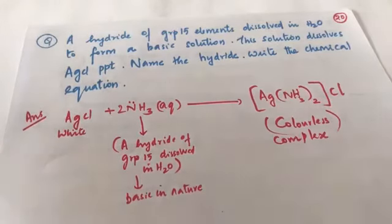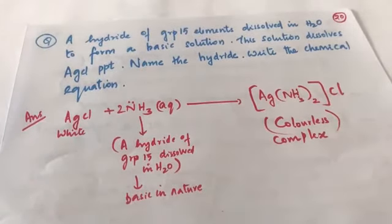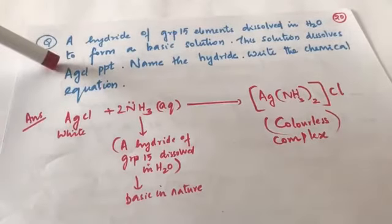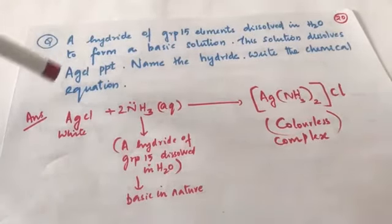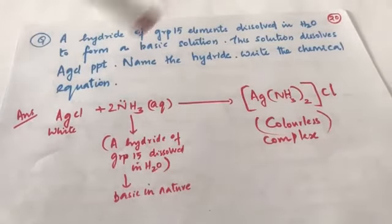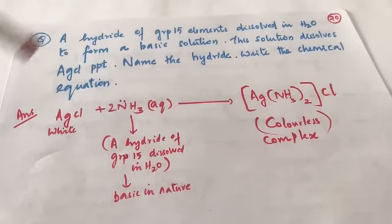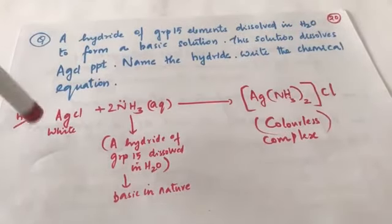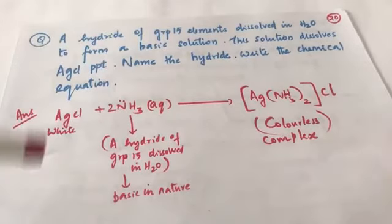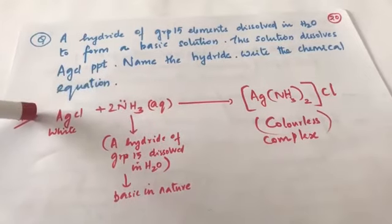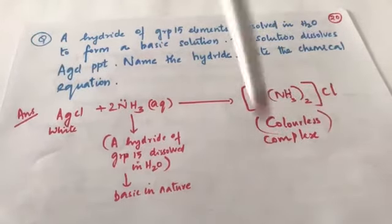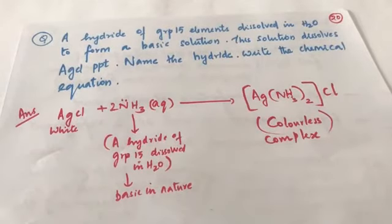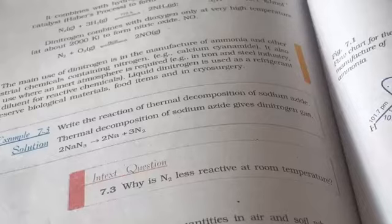Another question: a hydride of a group 15 element dissolves in water to form a basic solution and dissolves an AgCl precipitate — name the hydride and write the chemical equation. The answer is ammonia (NH3). AgCl (white precipitate) reacts with NH3 to form the colorless complex [Ag(NH3)2]Cl. This shows that ammonia donates its lone pair to Ag⁺ to form this coordination complex.